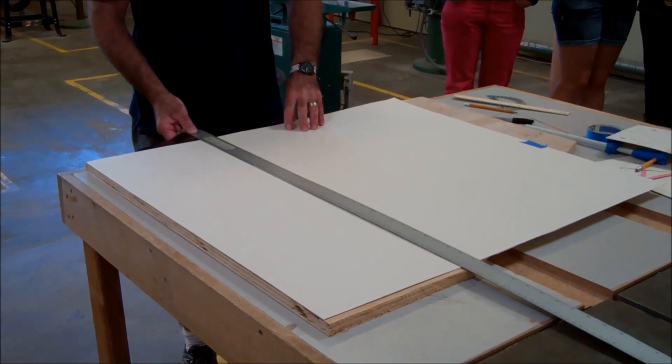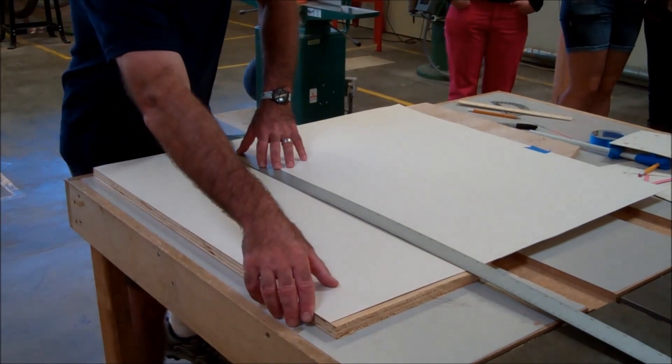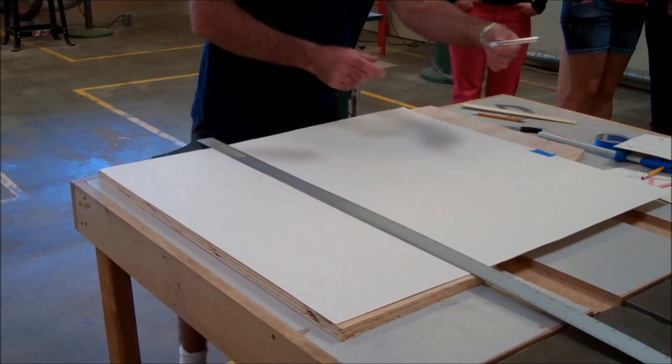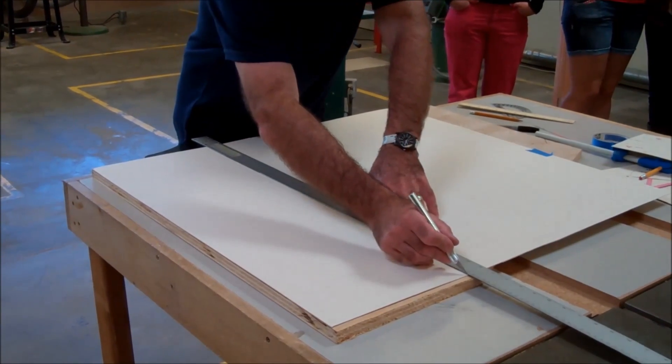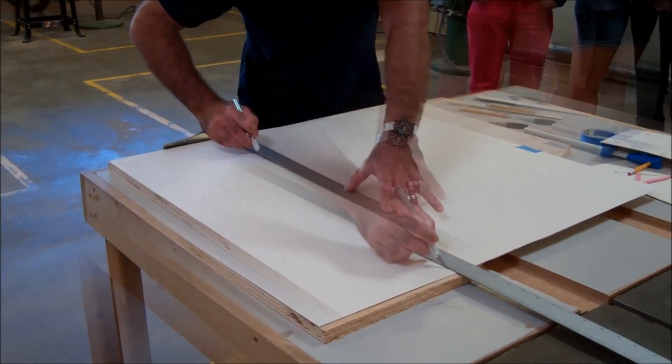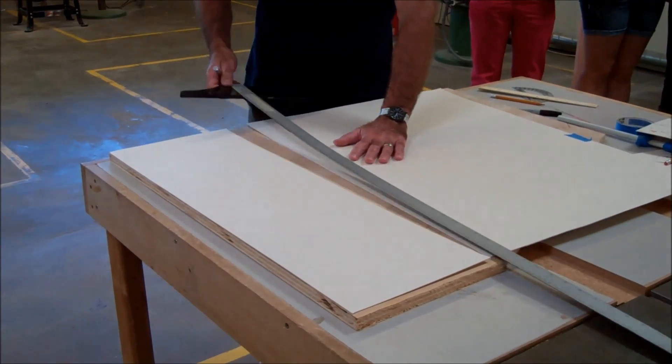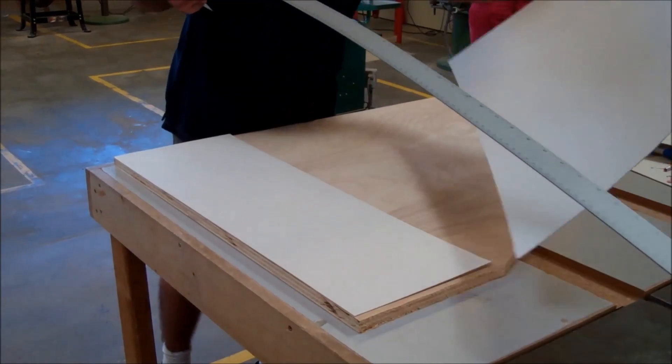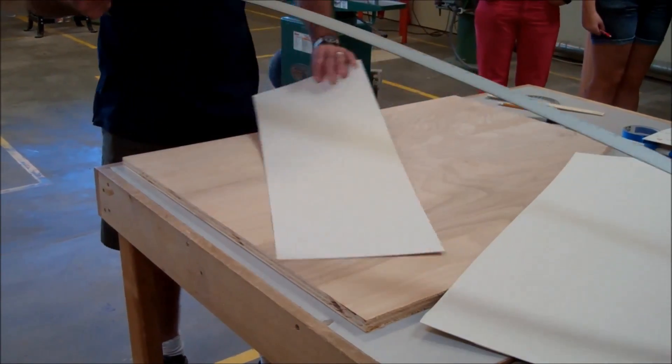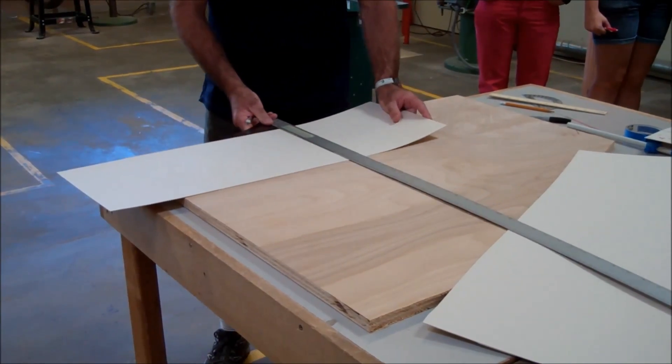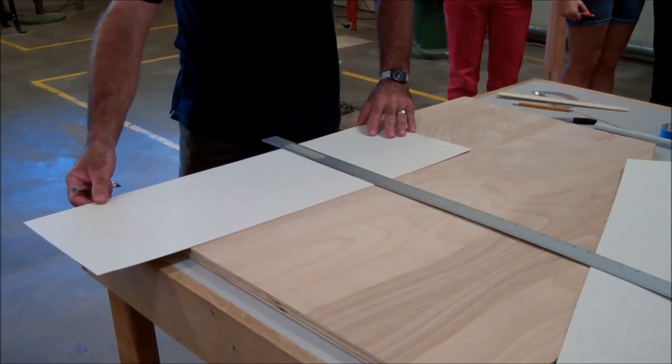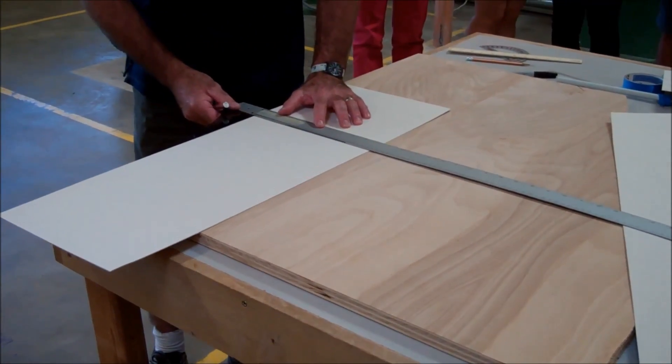Pull that square up, double-check everything's square, and then we use the exacto knife. When I'm cutting with this exacto, make sure I'm not cutting towards myself, so if I slip I don't cut myself. And there's 10. Make sure I'm square here, here's my 10.